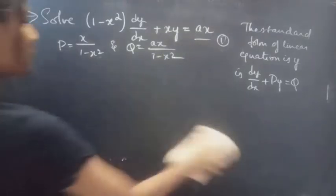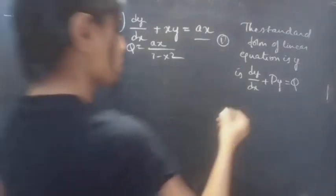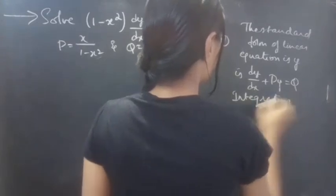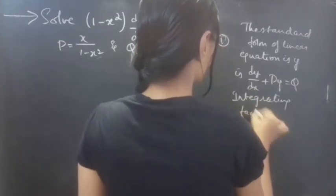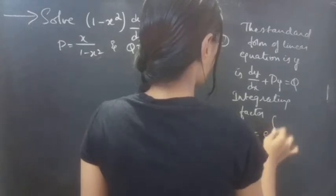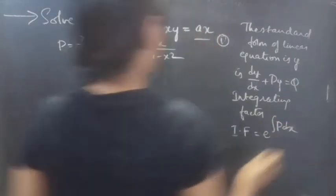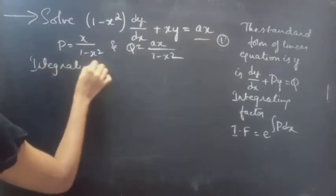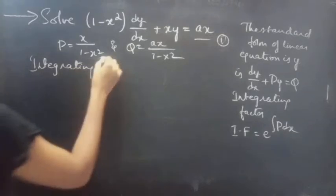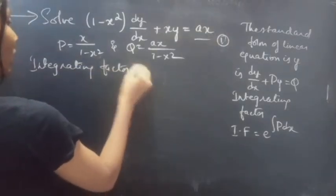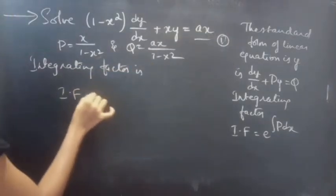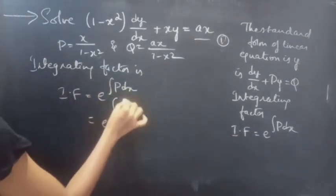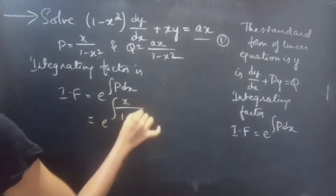Now we need to find the integrating factor. We know that the integrating factor of a linear equation is given by IF equals to e to the power integral of P dx. Let's find the integrating factor for equation 2: IF equals to e to the power integral of x/(1 minus x squared) dx.